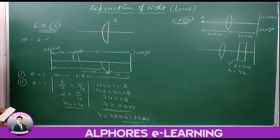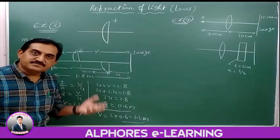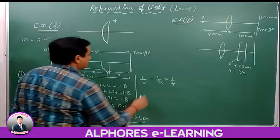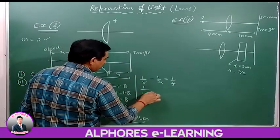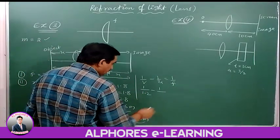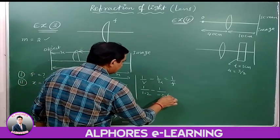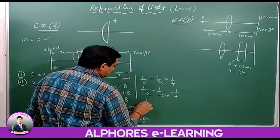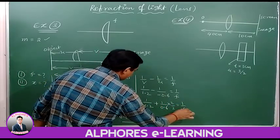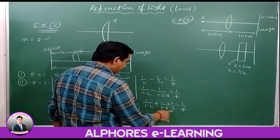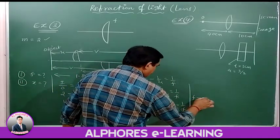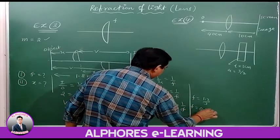Since V = 2U = 2 × 0.6 = 1.2 meters, this is the image distance. Now using the lens formula: 1/V − 1/U = 1/F. Substituting V = 1.2 and U = −0.6 (negative for real object): 1/1.2 + 1/0.6 = 1/F, which simplifies to F = 0.4 meters.